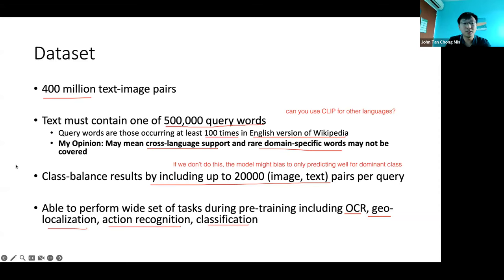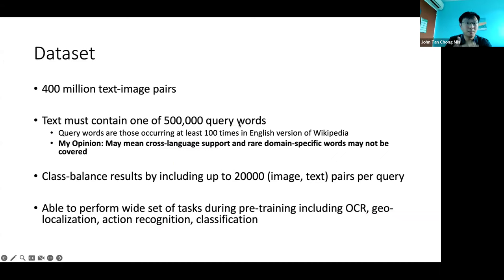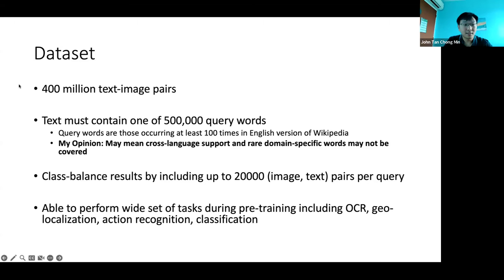As shown in the experiments, CLIP is quite versatile — given an image, ask for background, object, or action and it works. This scales beyond labels in any classification dataset. If you train a model on ImageNet, it only knows 1000 classes. But with CLIP, even if what you want to predict is not one of those classes, as long as the word has appeared in one of the 500,000 query words, it should be able to predict it. CLIP is really very versatile and robust to many different versions of prompts.